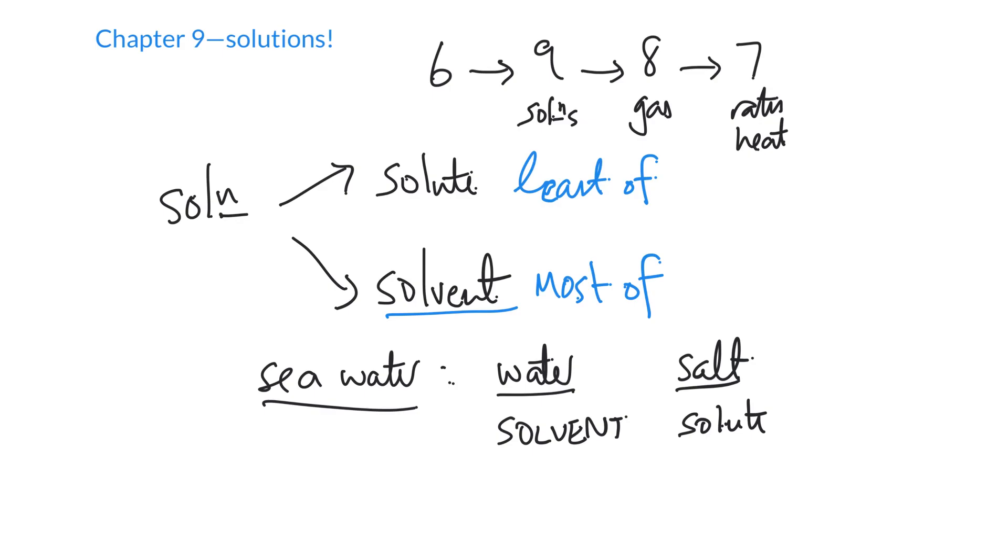We can have other solutions as well. So an example of another solution might be something like vodka. And vodka is a solution that primarily consists of water, about 60%, and the rest of it is alcohol, and the alcohol is about 40%.